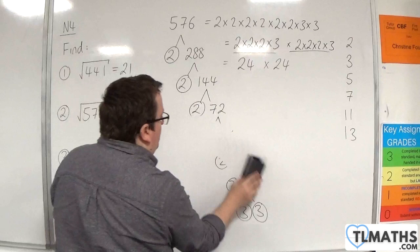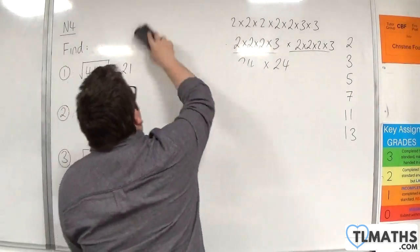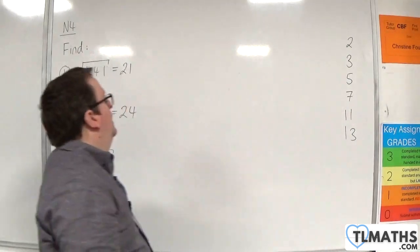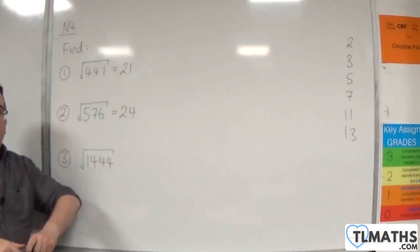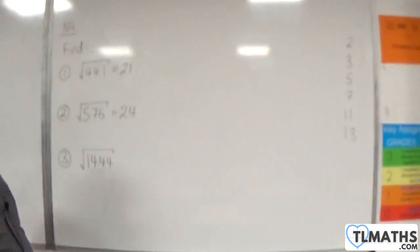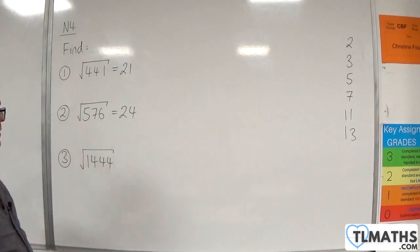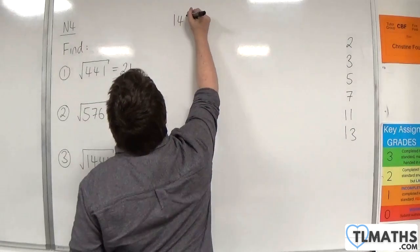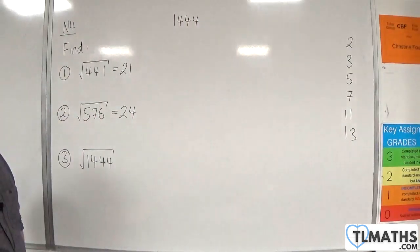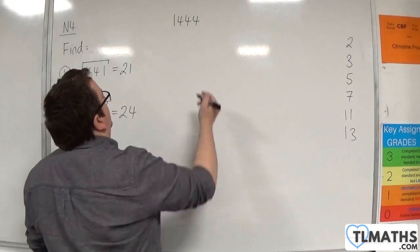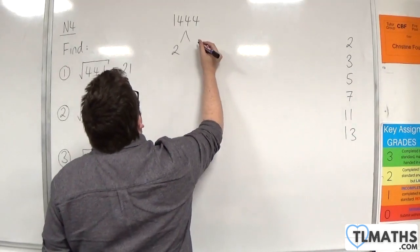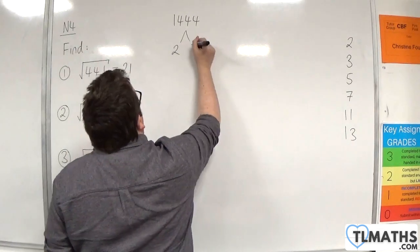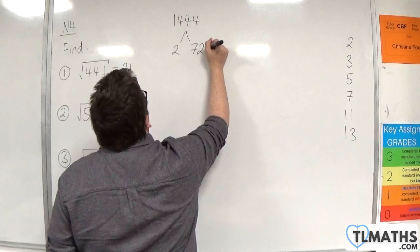You can see this method is quite nice — a nice way of being able to find the square root of these integers, which can seem quite daunting otherwise. How about the square root of 1,444? So 2 goes into 1,444 — that's going to be 722 times.